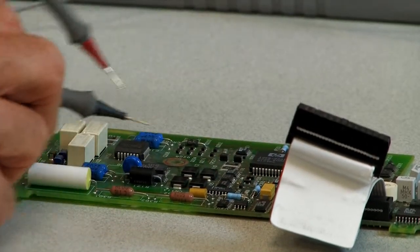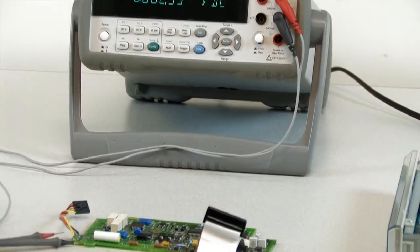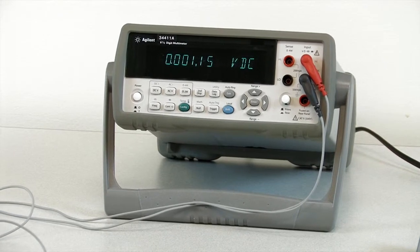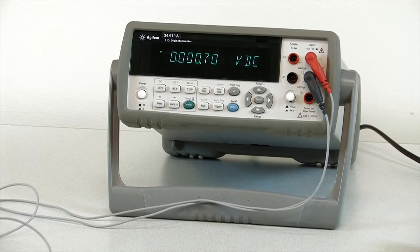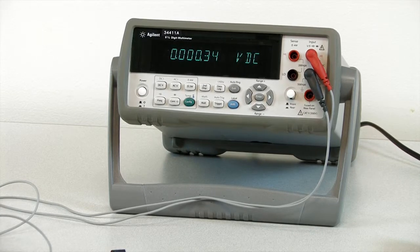Next, you'll want a DMM with a high-quality display. This is the 34411A. It uses a vacuum fluorescent display, so it's easy to read from a variety of angles and under multiple lighting conditions.